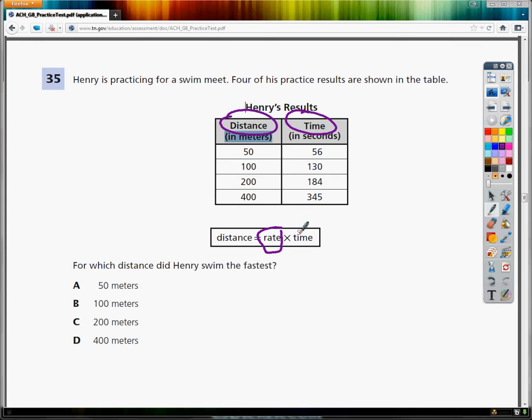I'm going to reorganize this formula to solve for rate by itself. To get rid of times T, I need to divide by T. So rate is distance divided by time.